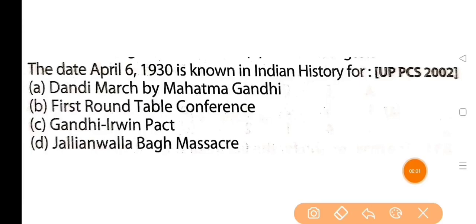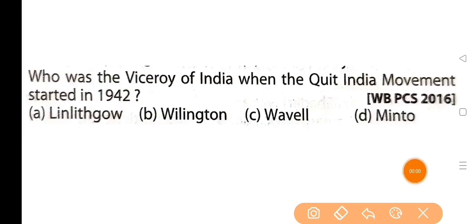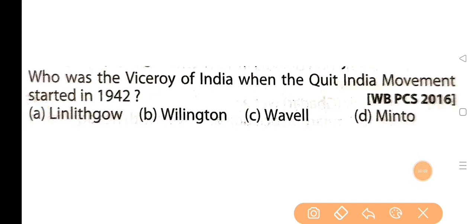Next question: the date April 6, 1930 is known in Indian history for — option A: Dandi March by Mahatma Gandhi. Next question: who was the Viceroy of India when the Quit India Movement started in 1942? 1942 sanat Bharat Tiyak Andolon arambo huar hamaayat Bharat aur viceroy hoi kune? The answer is option A: Linlithgow. The Quit India Movement's name comes from 'quit' — telling the British to leave India.